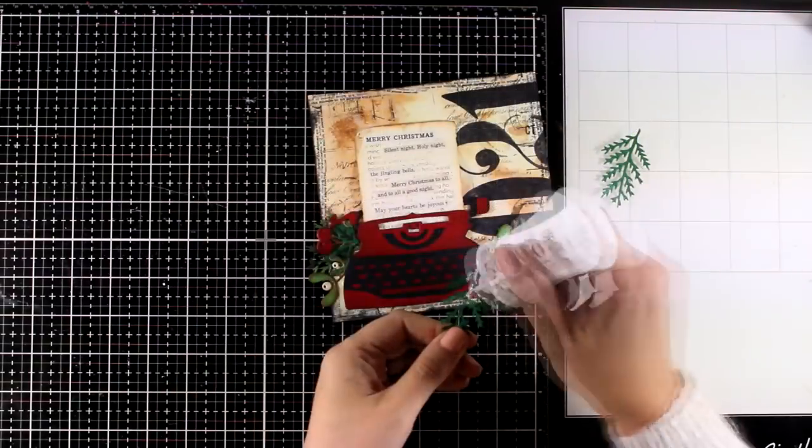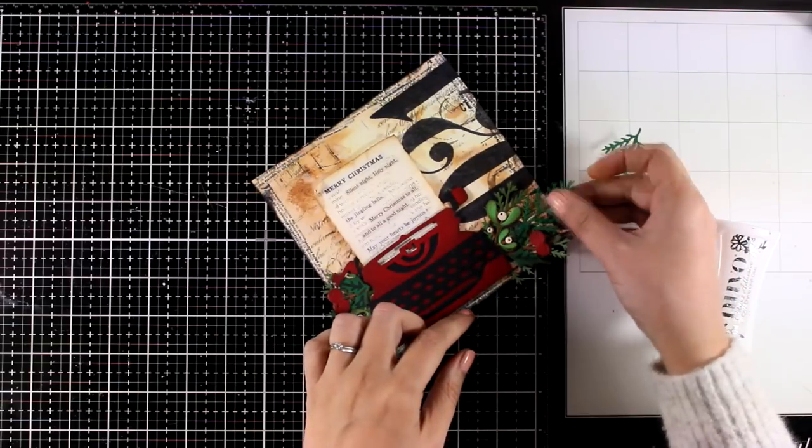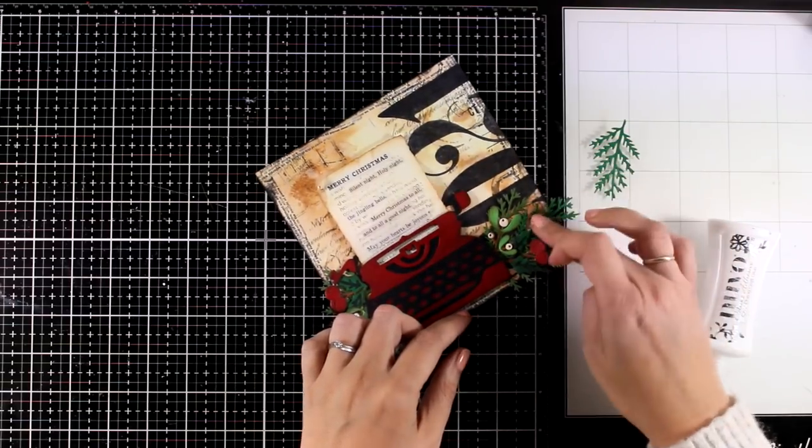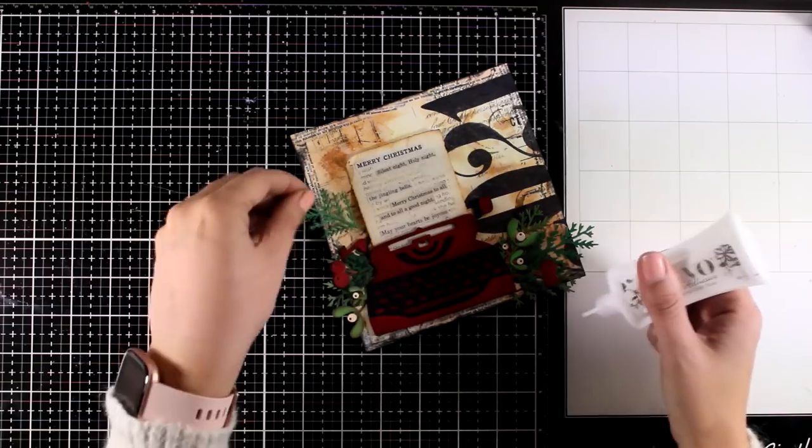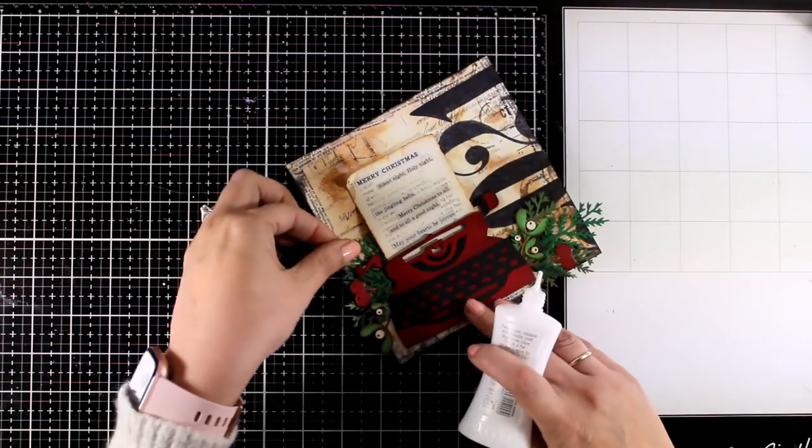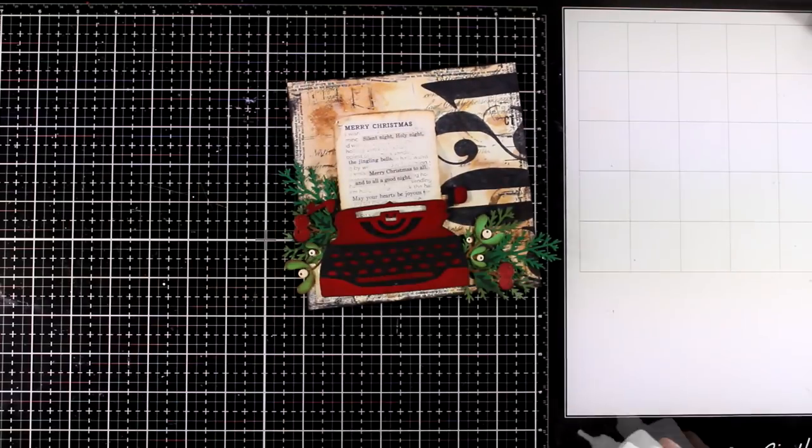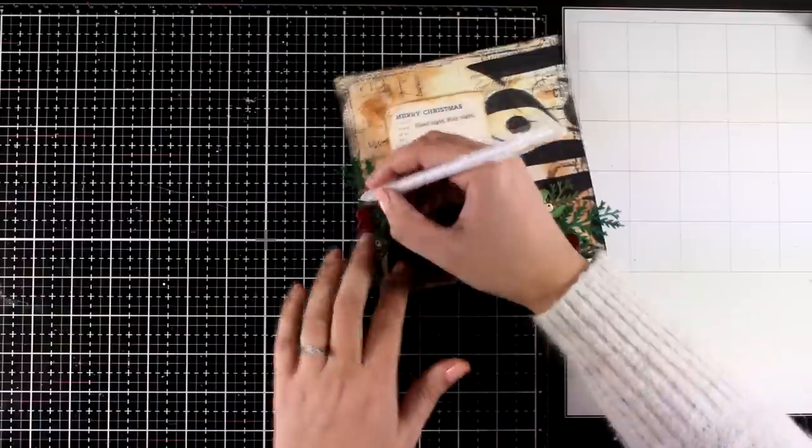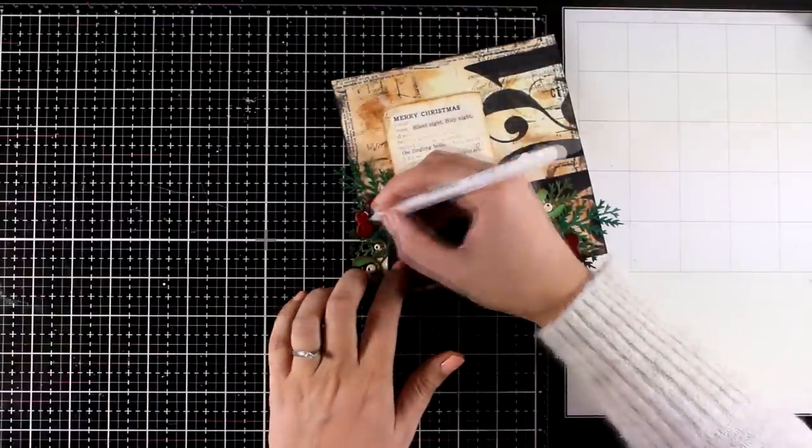I do add some more foliage on the clusters that I have just because I want them to look fuller. And then finally it's time for what you've been all waiting for, the white gel pen. So I'm going to bring it in and add some highlights on the typewriter as well as on the berries and even the leaves.